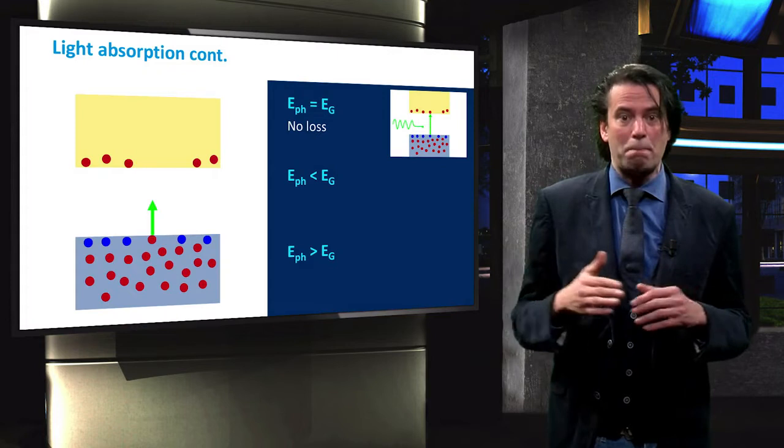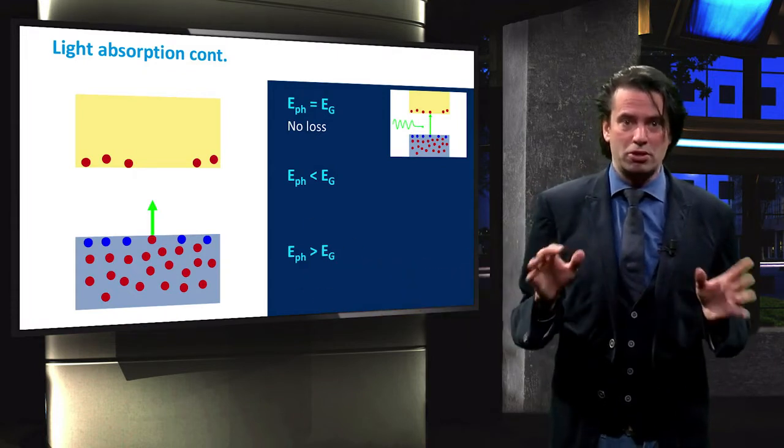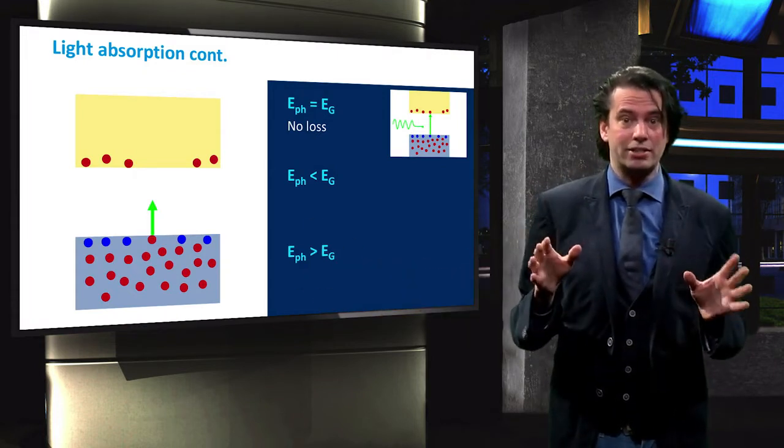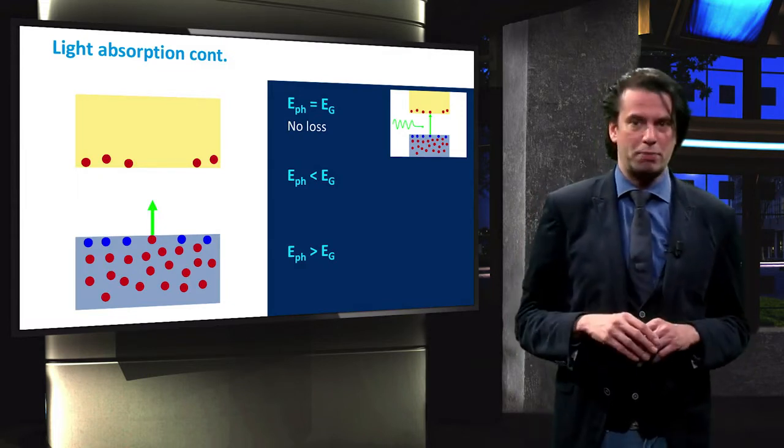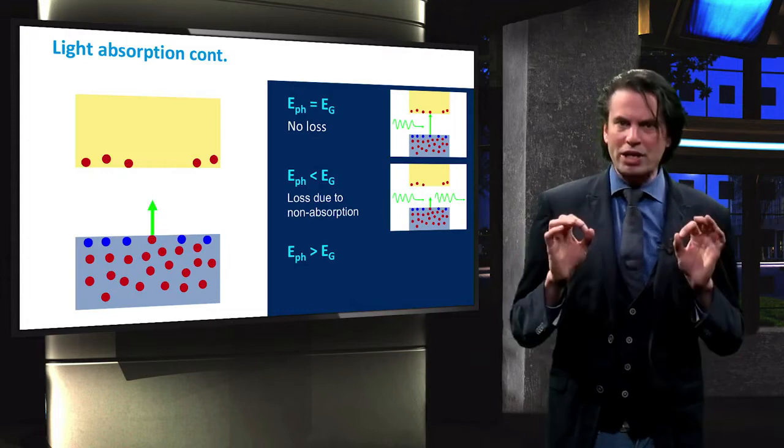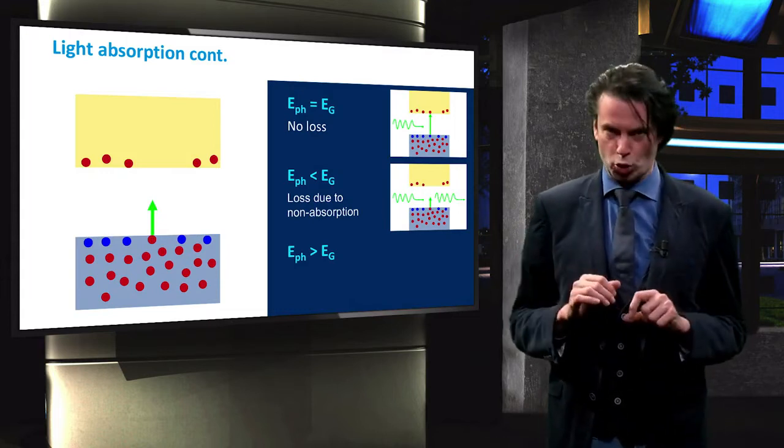these photons simply pass through the semiconductor material. The semiconductor material is essentially transparent to the photons with an energy lower than its band gap. We call this a non-absorption loss.